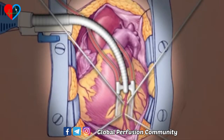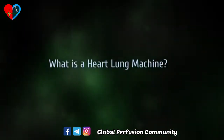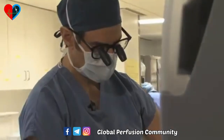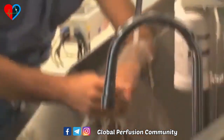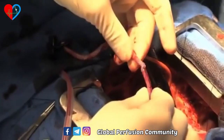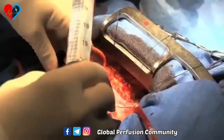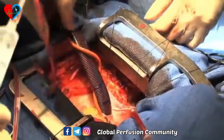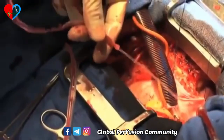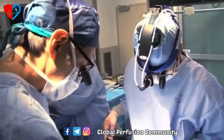A heart lung machine, also called a cardiopulmonary bypass machine, is a device that takes over the function of the body's heart and lungs during open heart or traditional surgery. The machine circulates essential oxygen-rich blood to the brain and other vital organs during open heart surgery, allowing the cardiac surgery team to operate on a heart that is blood-free and still. When the surgery is complete, the heart is restarted and the heart lung machine is disconnected.